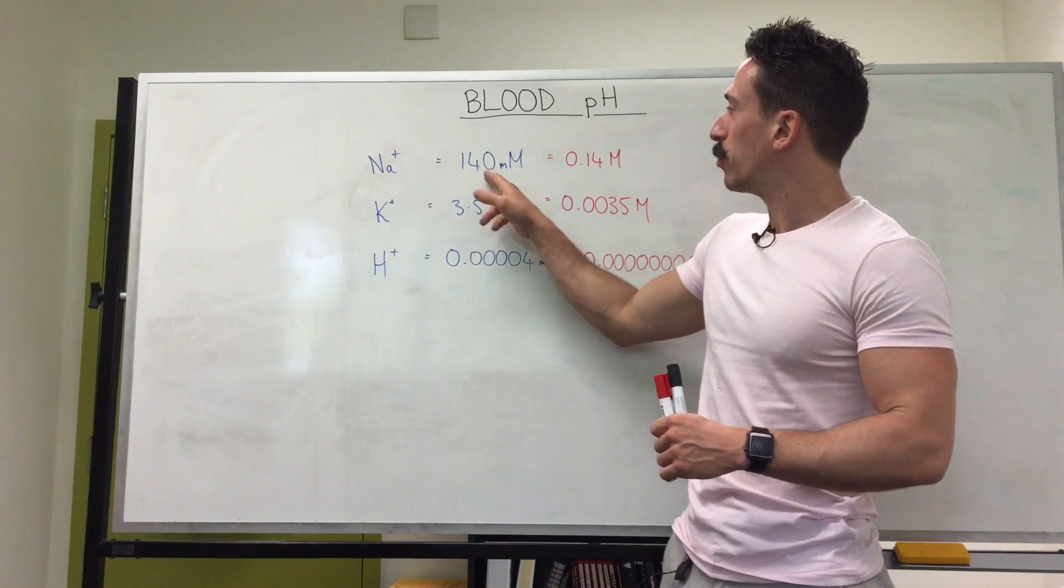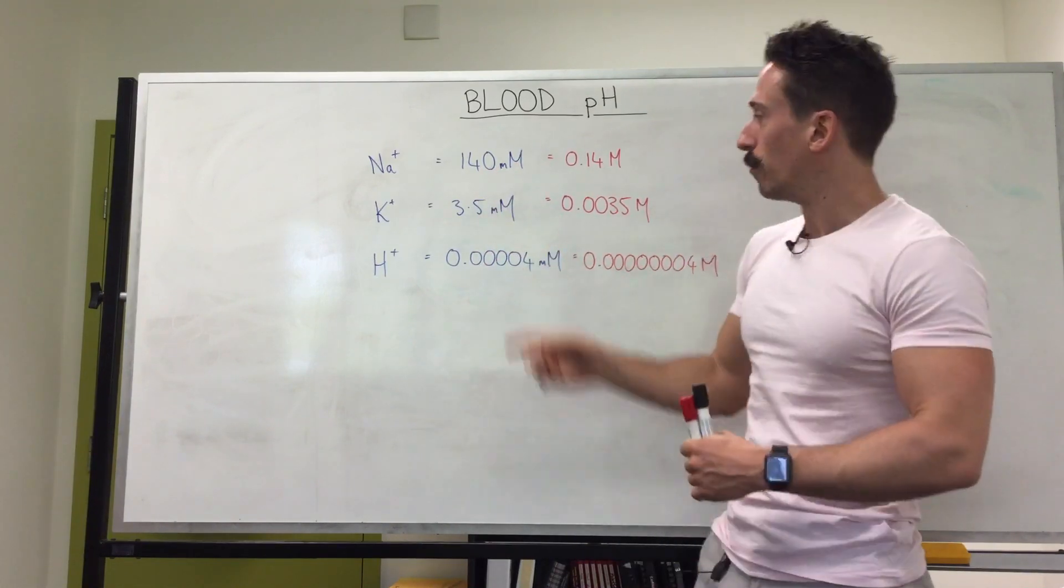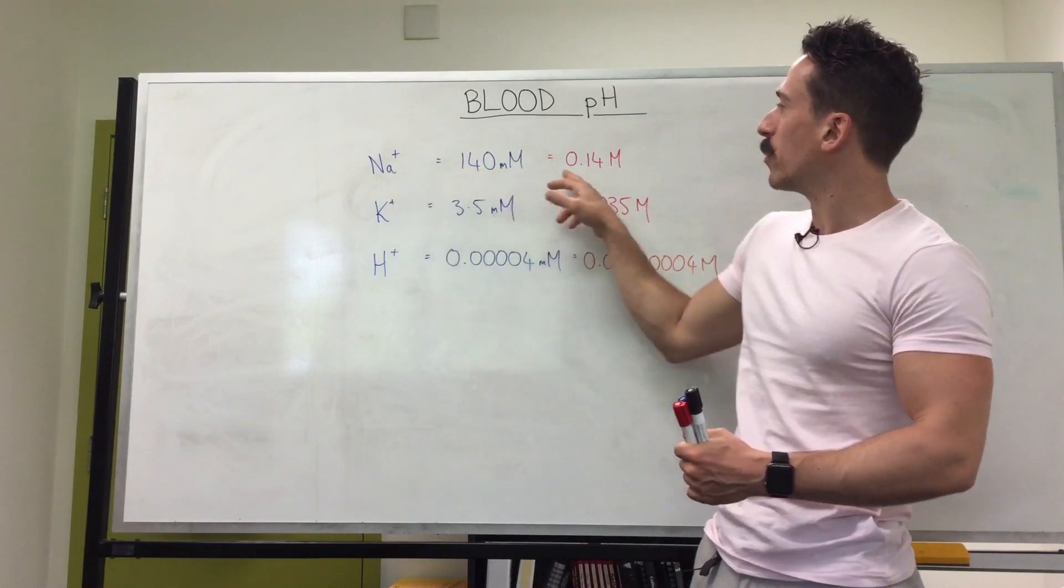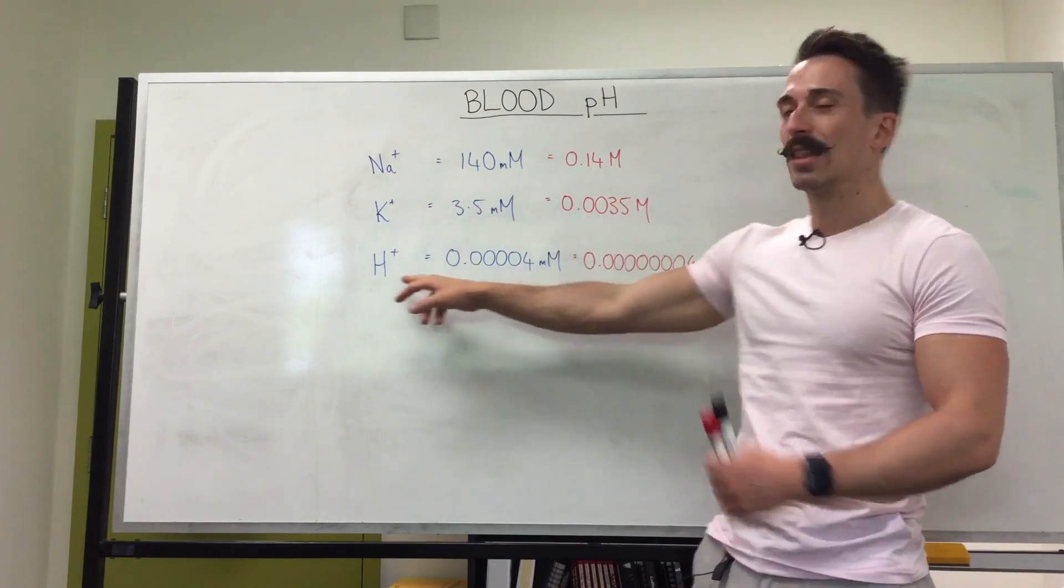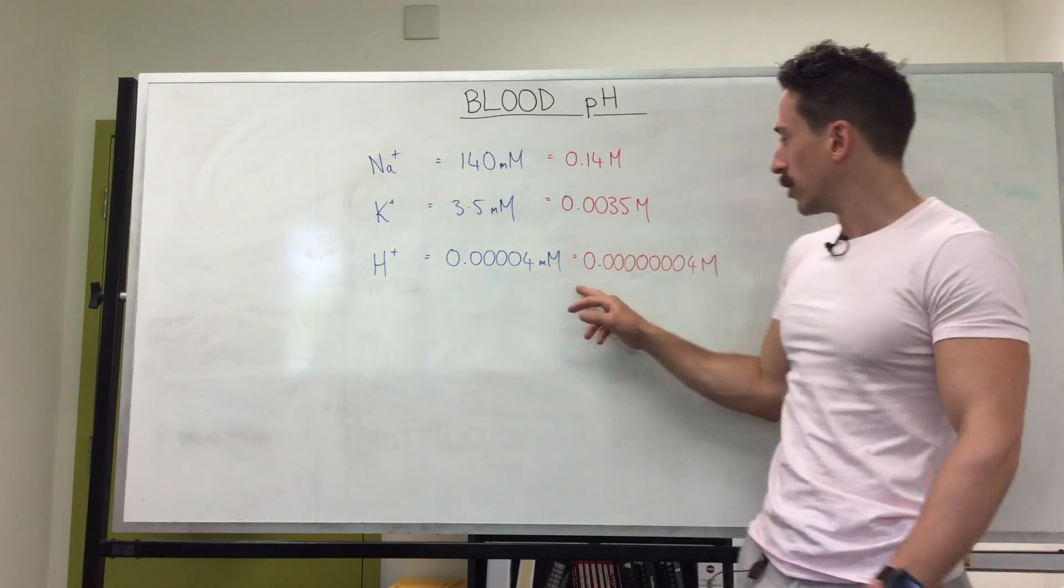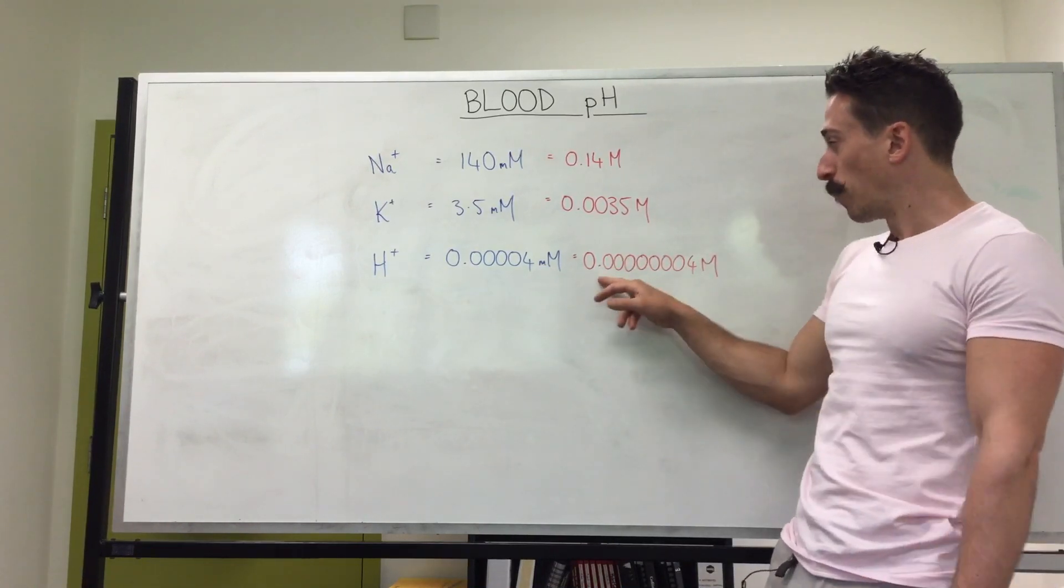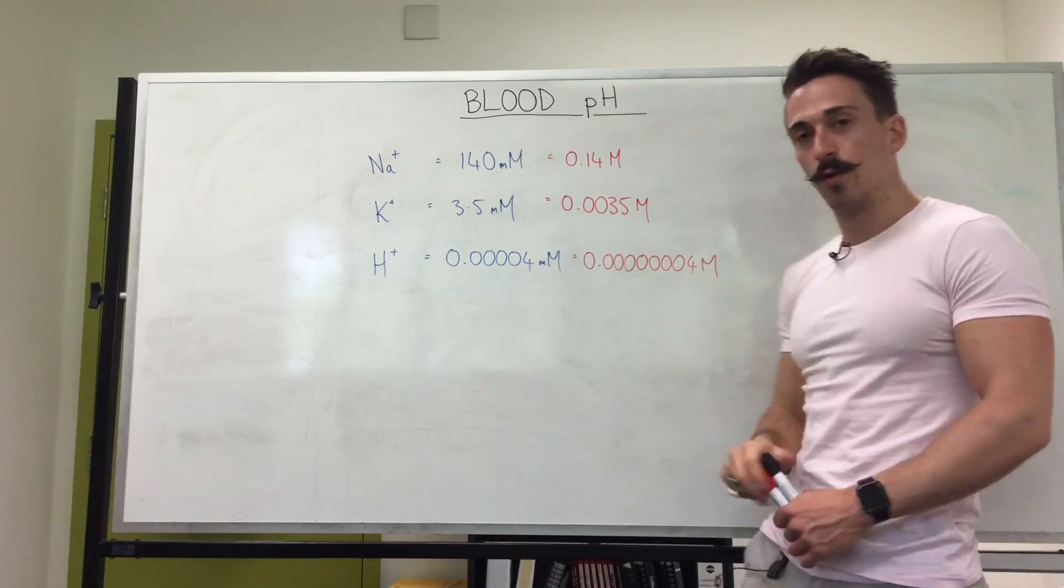Now sometimes we need to put these in molar form. So for example, the molar form of sodium is 0.14, for potassium ion 0.0035 and look how small the molar concentration is of hydrogen being 0.00000004.